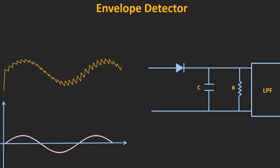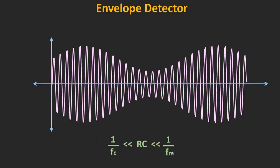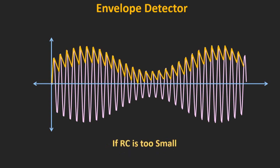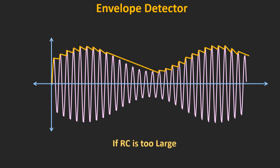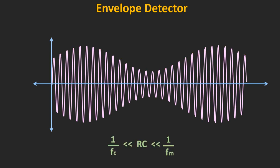This envelope detector works perfectly when the carrier signal frequency is much greater than the message signal frequency — that is, when fc is much greater than fm. Moreover, the values of R and C should be selected carefully: the RC time constant should be greater than 1/fc and less than 1/fm. If the RC time constant is too small, the capacitor discharges rapidly and there will be more ripple. If it is too large, the capacitor may not be able to follow the envelope.